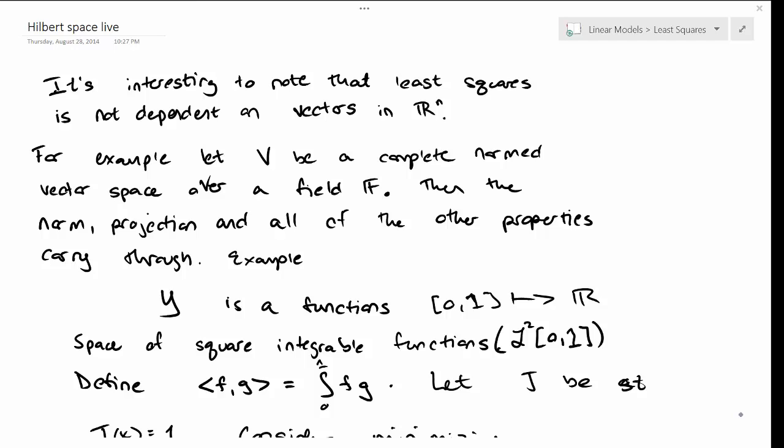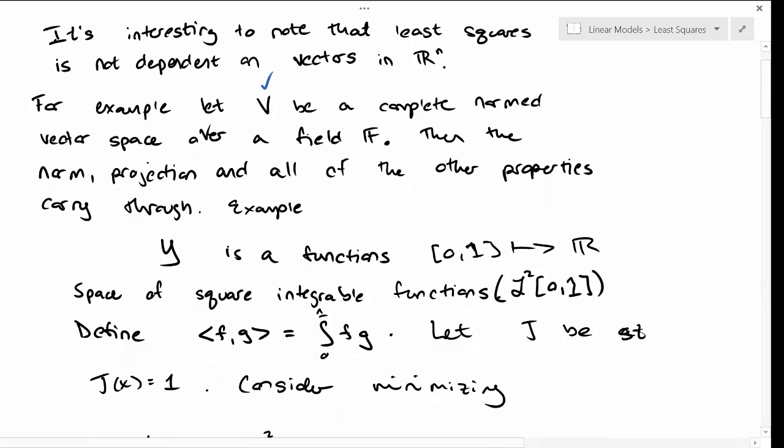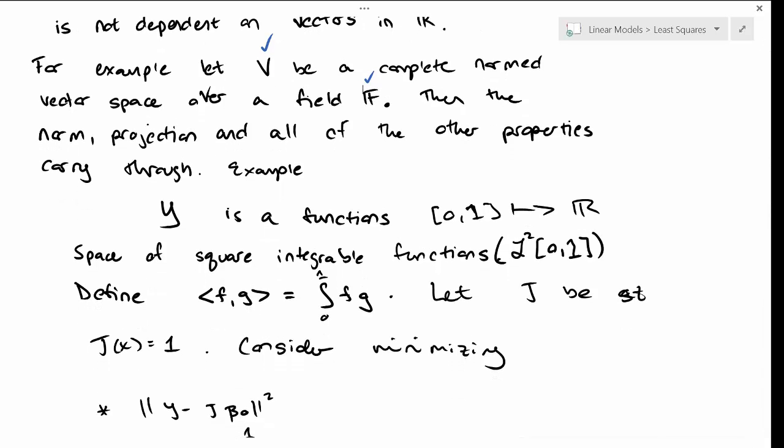It's interesting to note that least squares is not dependent on just talking about vectors in R^n. For example, let V be any vector space, a complete normed vector space over some field F. Then the norm, projection, and all the other properties are exactly the same as in vector spaces.